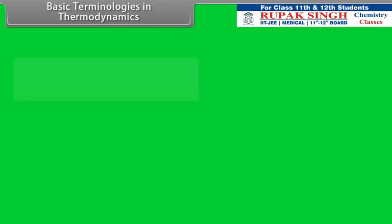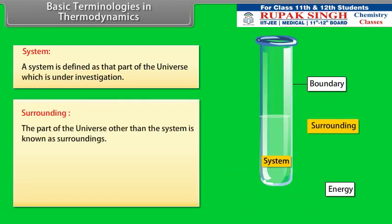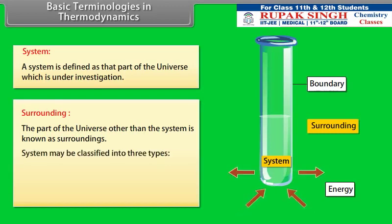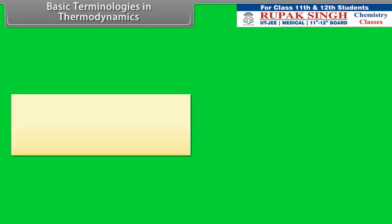Basic terminologies in thermodynamics. A system is defined as that part of the universe which is under investigation. For example, if we are studying the effect of temperature on the properties of water, then water will be taken as the system. The part of the universe other than the system is known as surroundings. A system which can exchange mass as well as energy with the surroundings is called an open system.